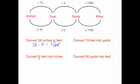Next, convert 6 feet into inches. To go from feet into inches you multiply by 12. So we're going to do 6 times by 12, and that's equal to 72 inches. So that means if something is 6 feet long, it is 72 inches long.